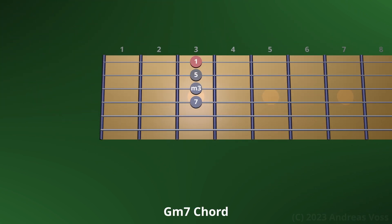Here's a G minor 7th chord. From this simple shape, we will construct the dominant 7th, the major 7th, and the minor 7 flat 5 chords all over the fretboard. The minor 7th chord consists of the root labeled 1, the minor 3rd labeled m3, the 5th labeled 5, and the 7th labeled 7. The root labeled 1 is on the 3rd fret of the high E string. The minor 7th chord is the minor triad with the 7th added.